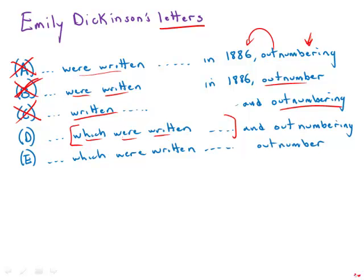But the problem is on the outside again, all we have is a participle. So the letters which were written and outnumbering, that's not a complete sentence because we don't have an actual bona fide verb in the independent clause of the sentence. So that one is out also. So we've eliminated four. We hope that E is going to work.